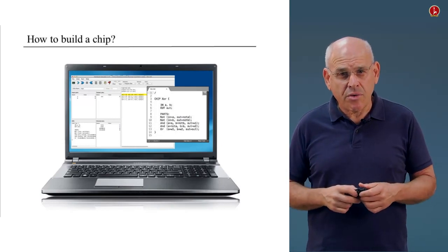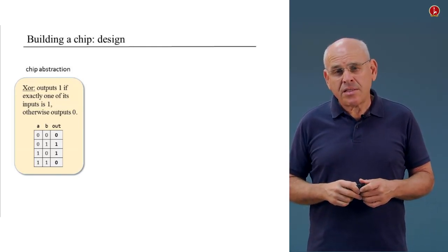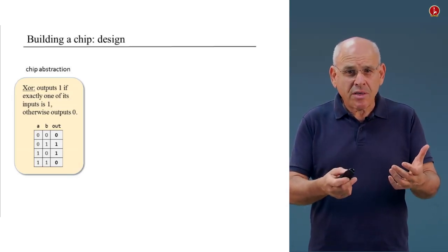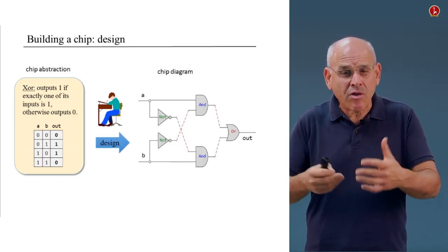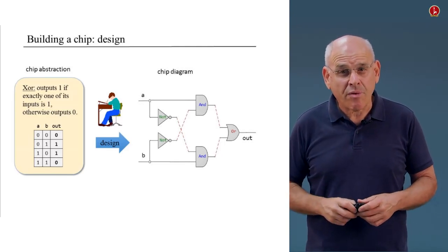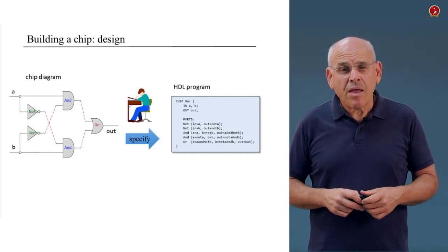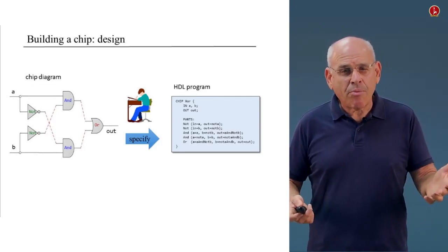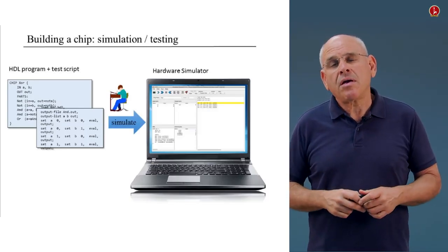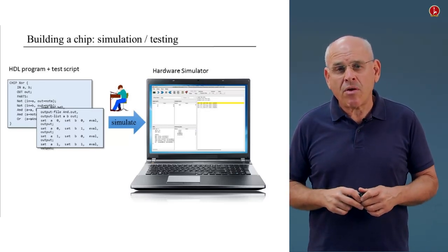Here's an example of a XOR chip, which is one out of about 30 different chips that we are going to build in this course. What you see here is an abstract description of how XOR operates. You're going to take this abstraction, think about it, and along with tips and guidance that we'll provide, you will come up with a logic diagram that enables you to build XOR using lower-level gates that you built before. Then you will take this diagram and specify it using a language called Hardware Description Language. The result will be an HDL program. You will combine it with test scripts that we will provide, and then debug, test, and complete your HDL program using the Hardware Simulator.